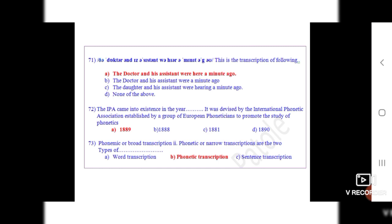Question 73: Phonemic or broad transcription, phonetic or narrow transcription are the two types of dot dot dot. The correct option is B, phonetic transcription.